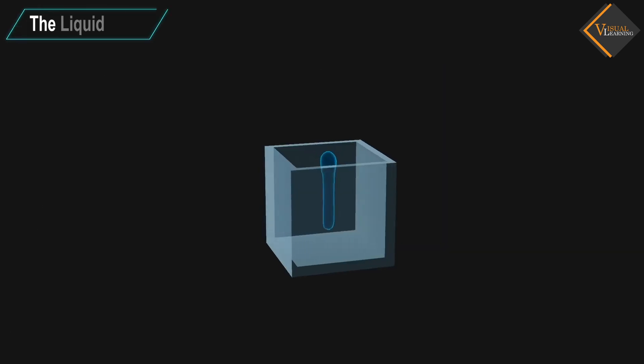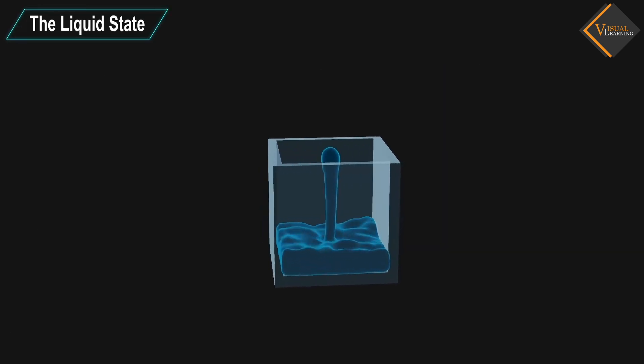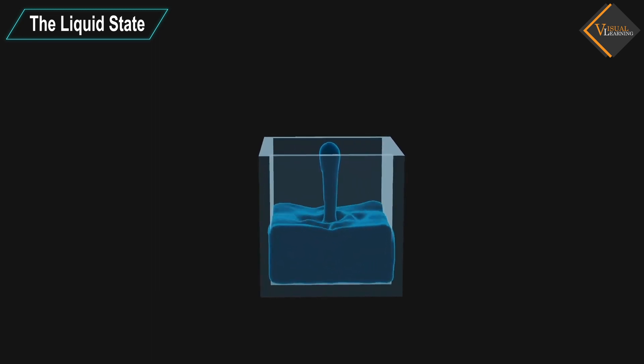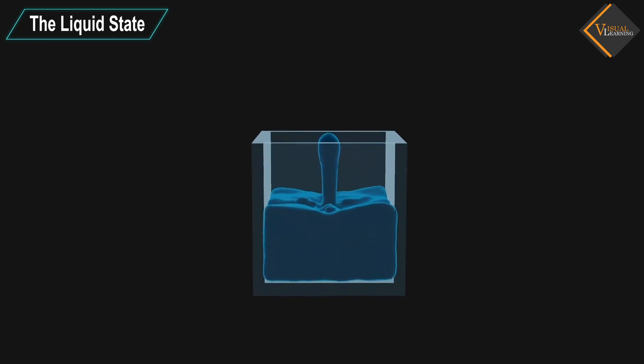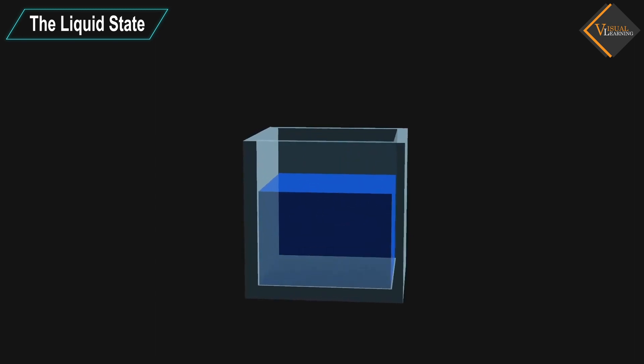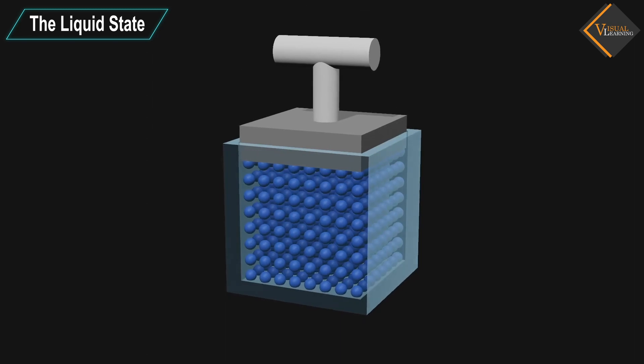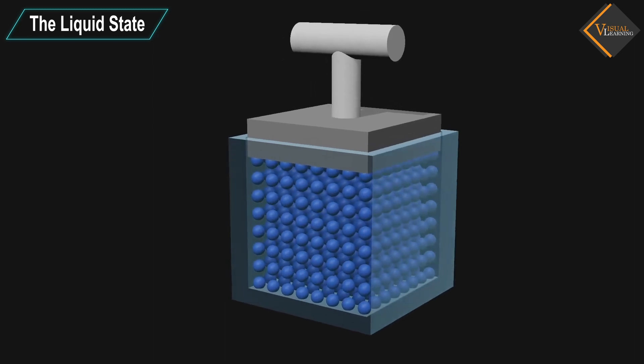The liquid state: Liquids take the shape of the container in which they are kept. Liquids are difficult to compress as particles have less space between them to move.